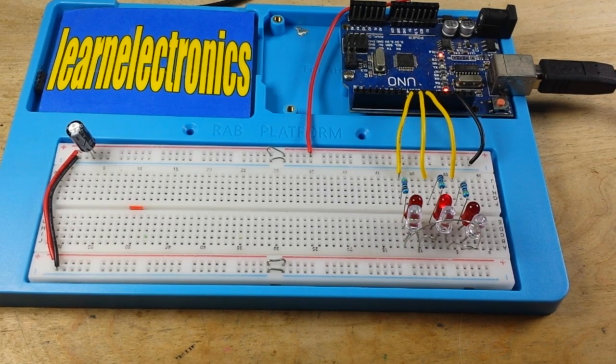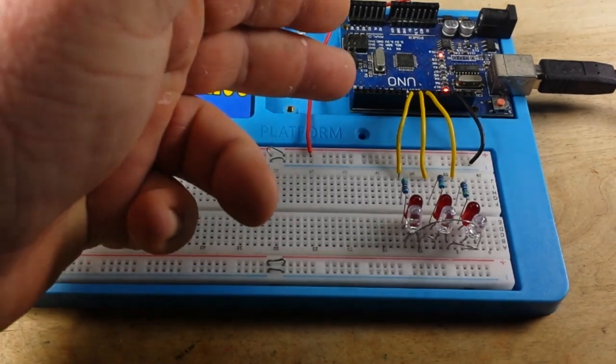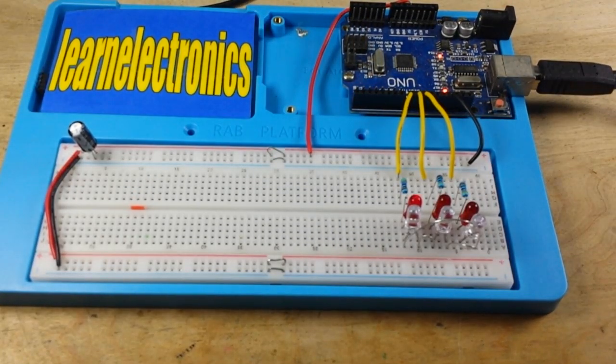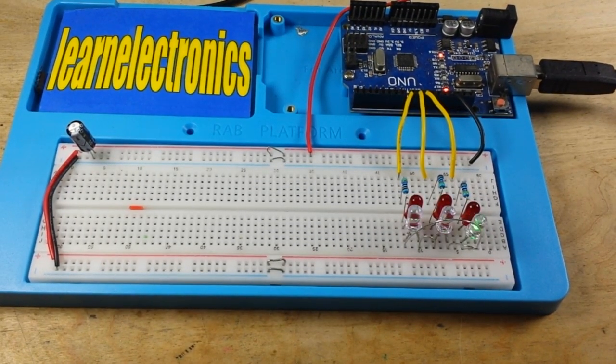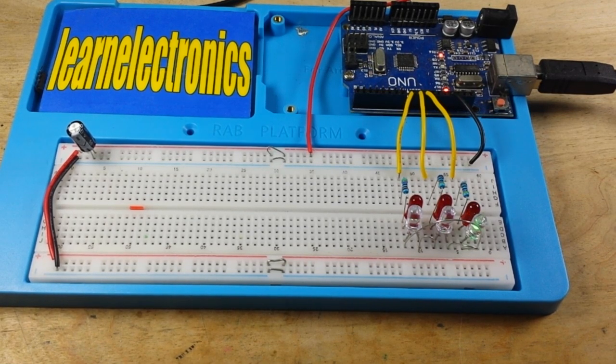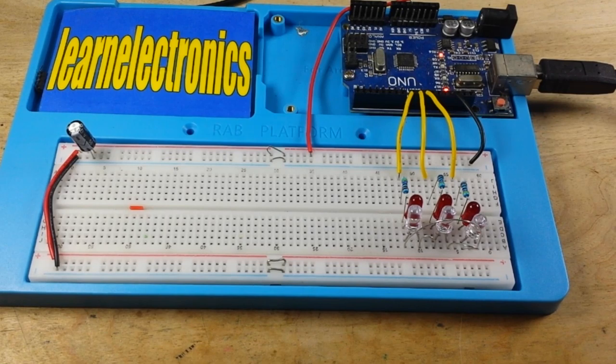If you don't know what tri-state logic is, it means that each pin from our Arduino can have three separate states. It can be high, it can be low, or it can be what we call high Z, or an input state. And by using this technique, you can control multiple LEDs with a very few number of pins.